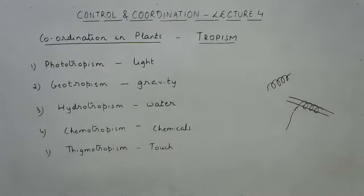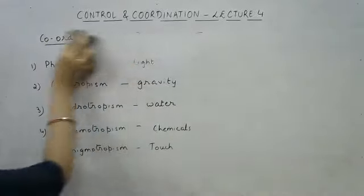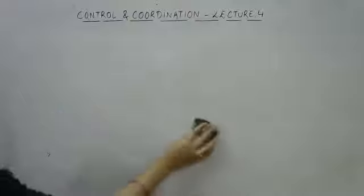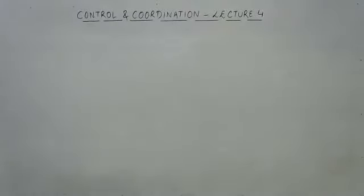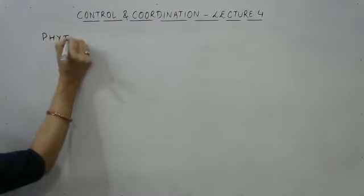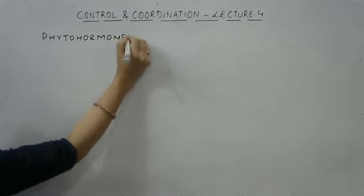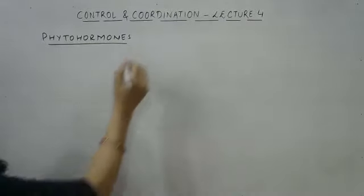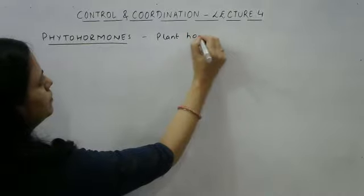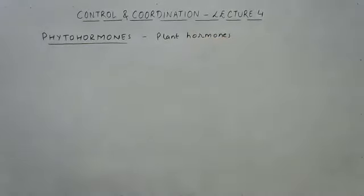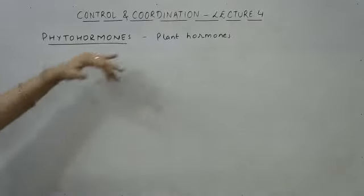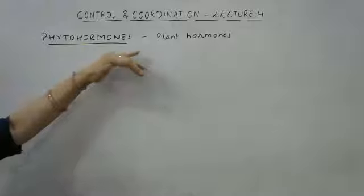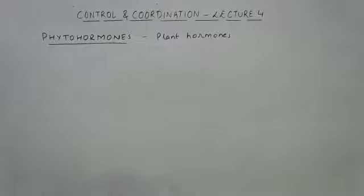Now moving on to the next topic — plant hormones. Just like we have hormones in our body, plants also secrete some hormones. They are known as phytohormones — the technical name for plant hormones. Phytohormones are naturally occurring chemical substances present in plants which bring about control and coordination in them. Let us now discuss the various plant hormones in detail.